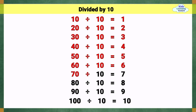70 divided by 10 equals 7. 80 divided by 10 equals 8. 90 divided by 10 equals 9. 100 divided by 10 equals 10.